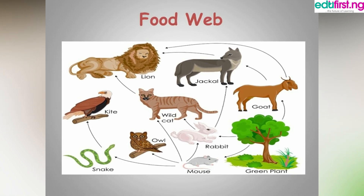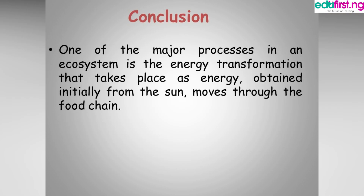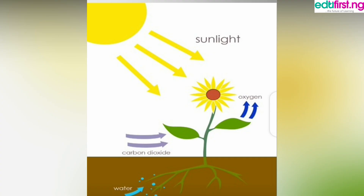In conclusion, one of the major processes in an ecosystem is energy transformation, as energy obtained initially from the Sun moves through the food chain. The first entrance of energy into the ecosystem is from the Sun. Plants are the primary producers — they get energy from the Sun and produce food through photosynthesis. Other organisms then feed on them to get energy. That's how energy is transferred in the ecosystem. Thank you and have a lovely day.